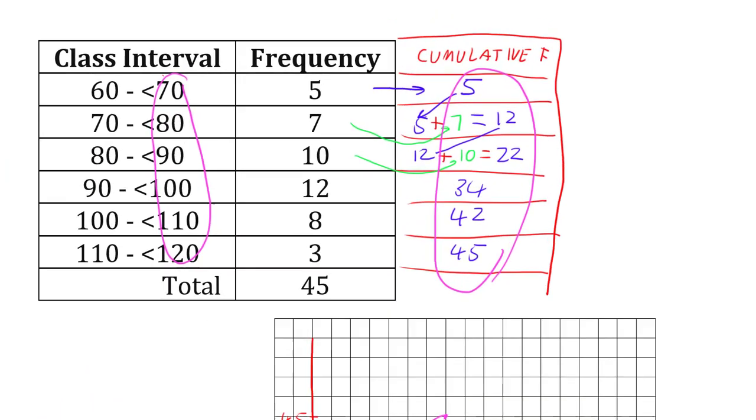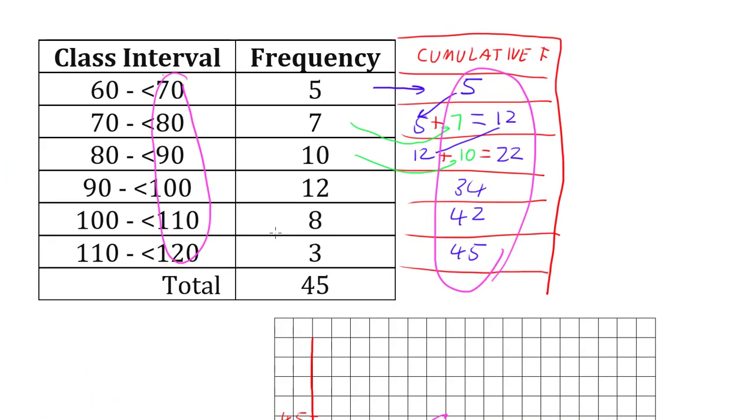So, if you are asked to find the median of data in a grouped frequency table, you create your cumulative frequency by adding up the frequencies as you go down.